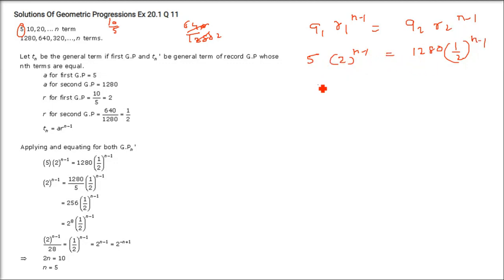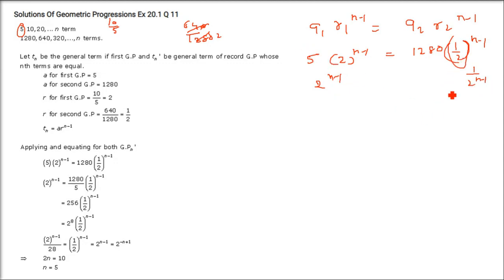Bringing 5 to the right-hand side and combining: 2^(n−1) · 2^(n−1) = 1280/5 = 256. So 2^(2(n−1)) = 256.